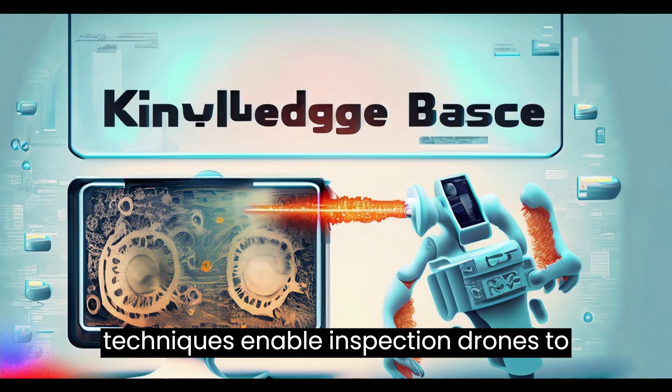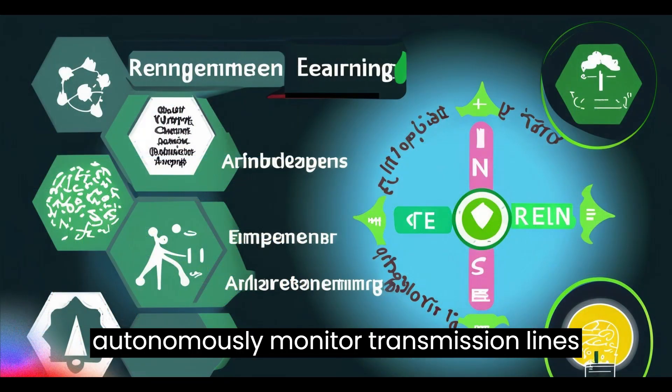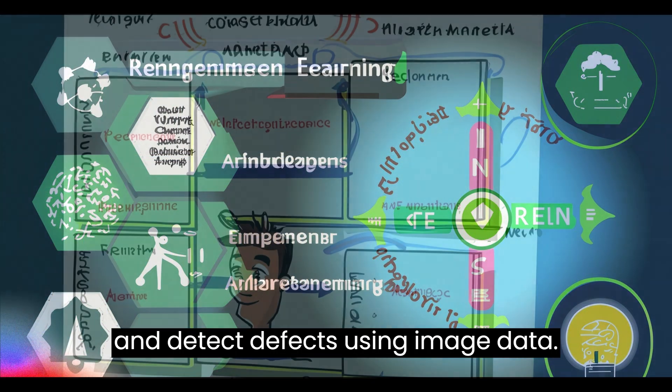Computer vision techniques enable inspection drones to autonomously monitor transmission lines and detect defects using image data.